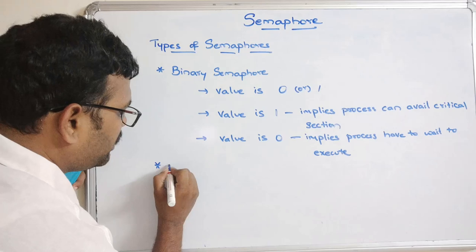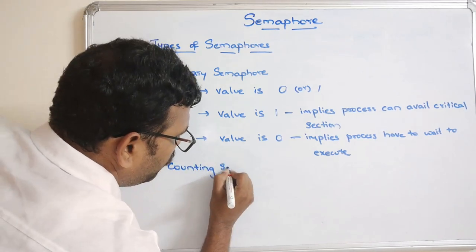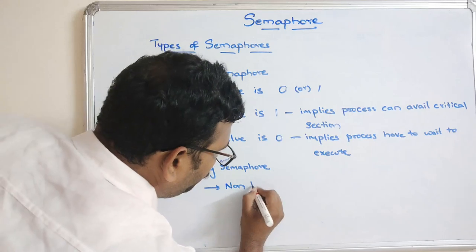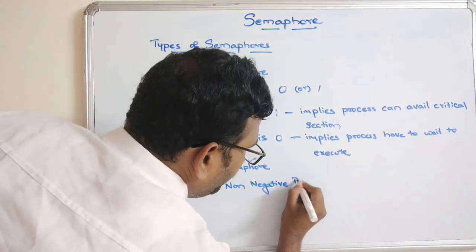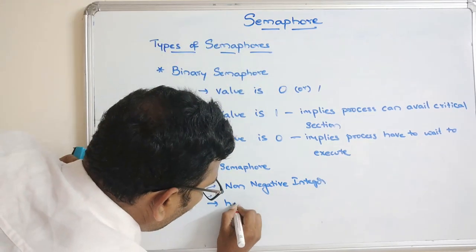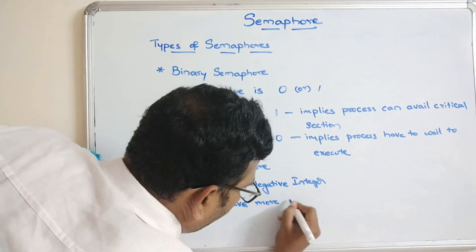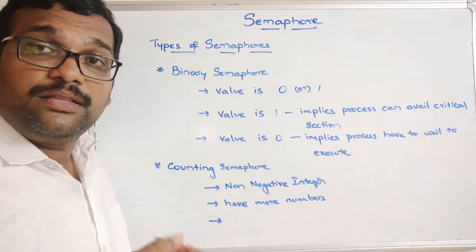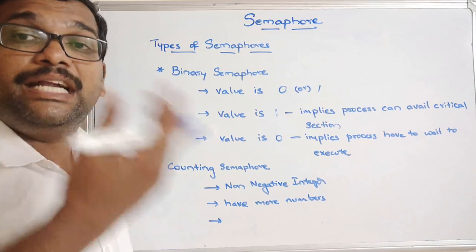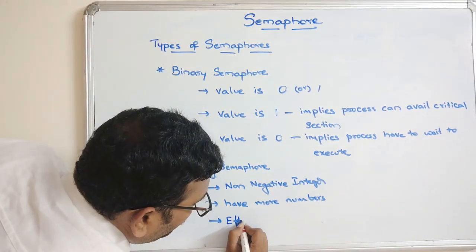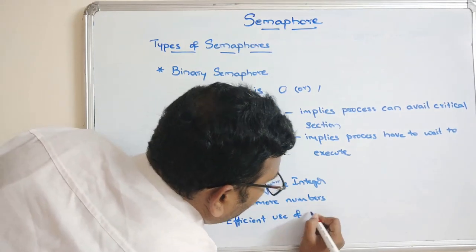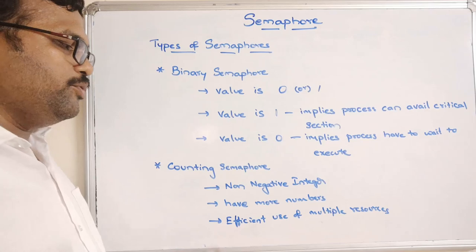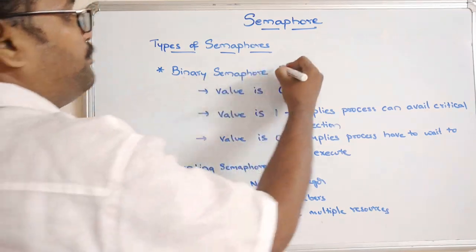The second category of semaphore is a counting semaphore. Here the semaphore holds a non-negative integer value and will have more than two numbers. This type of semaphore is mainly used for efficient use of a pool of multiple resources — if there are multiple resources available, we use counting semaphores.